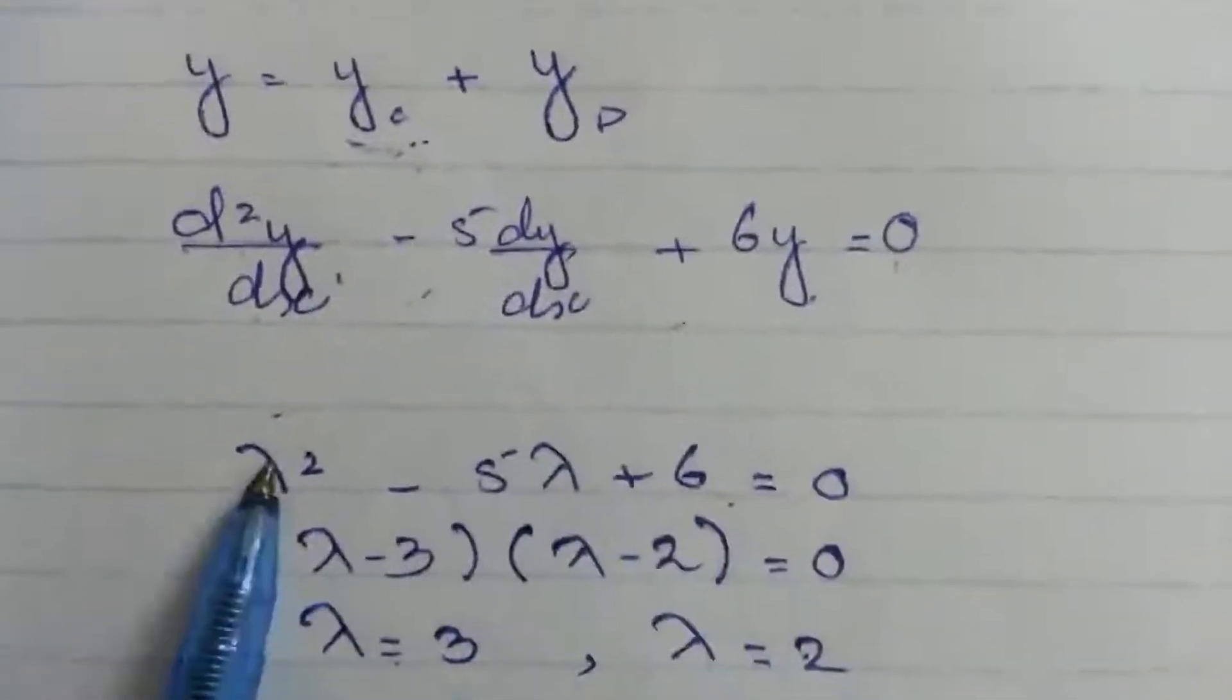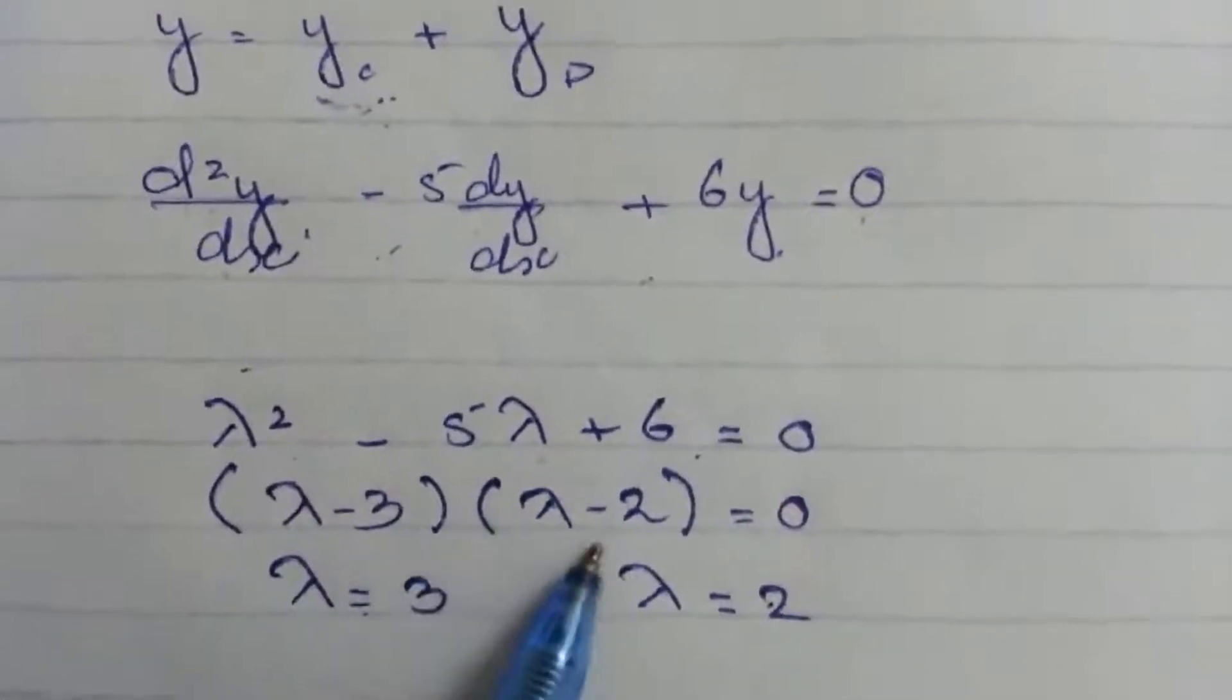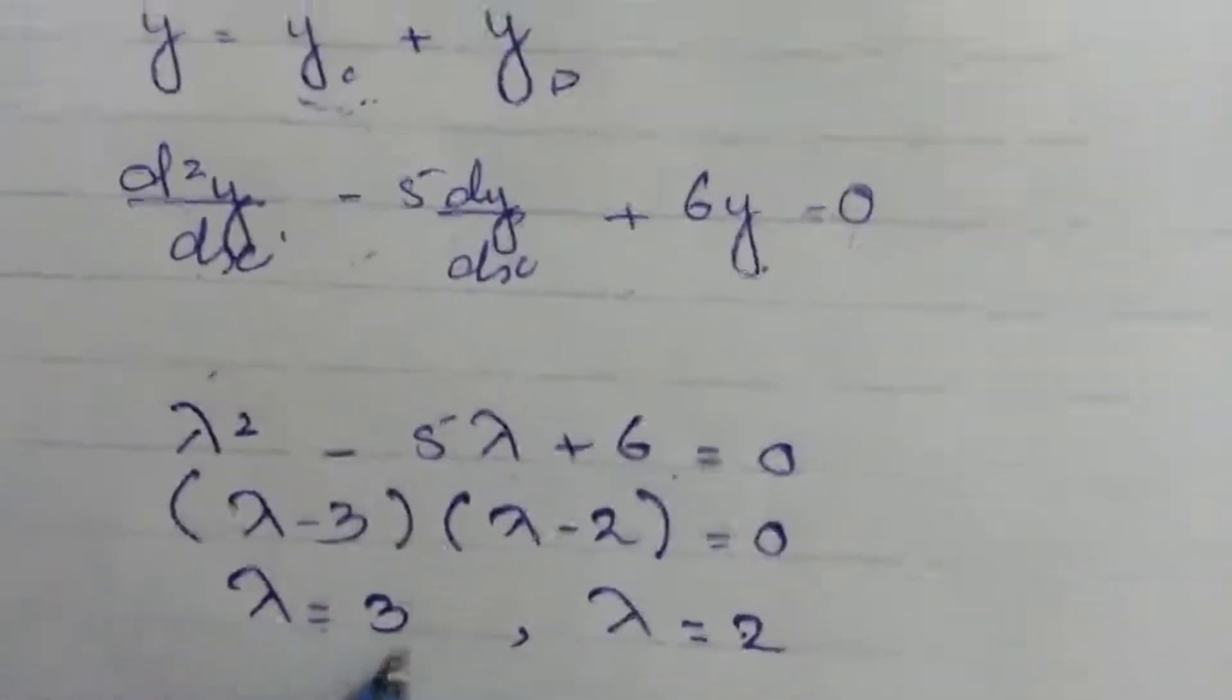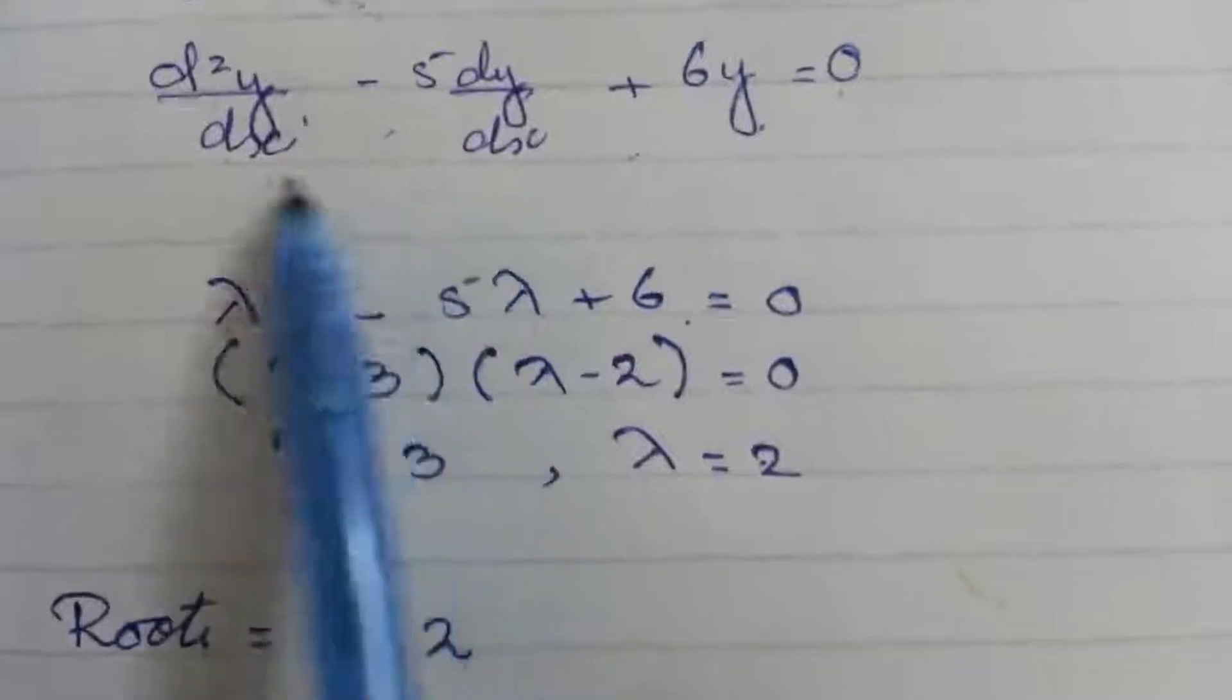This is a quadratic equation. After solving this we get λ minus 3 into λ minus 2. It means λ equals 3, λ equals 2. These two are basically the roots of this equation.